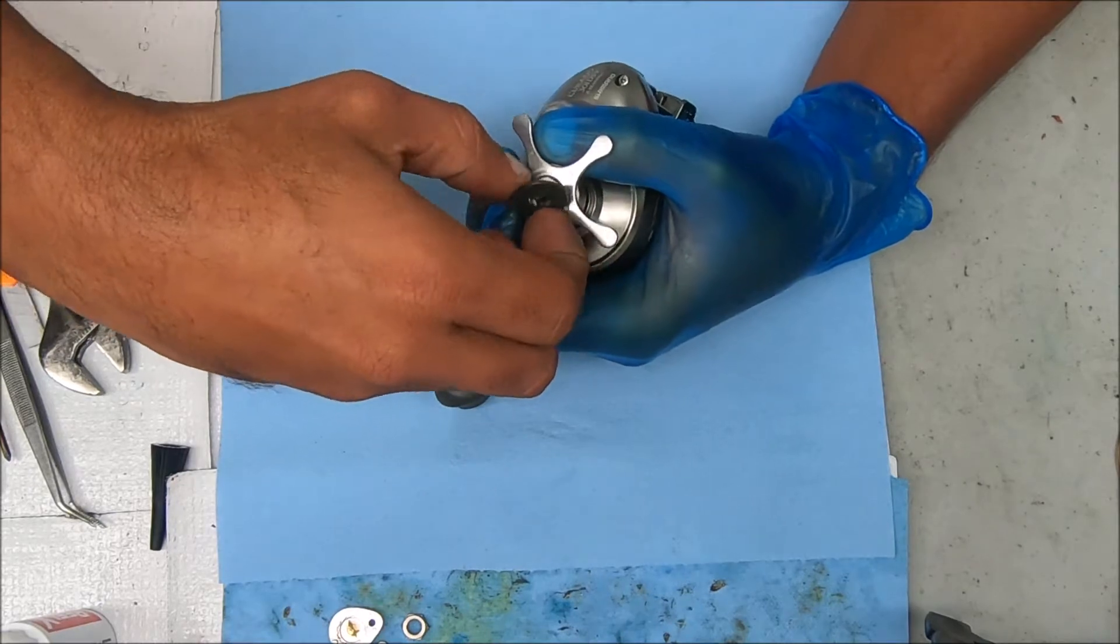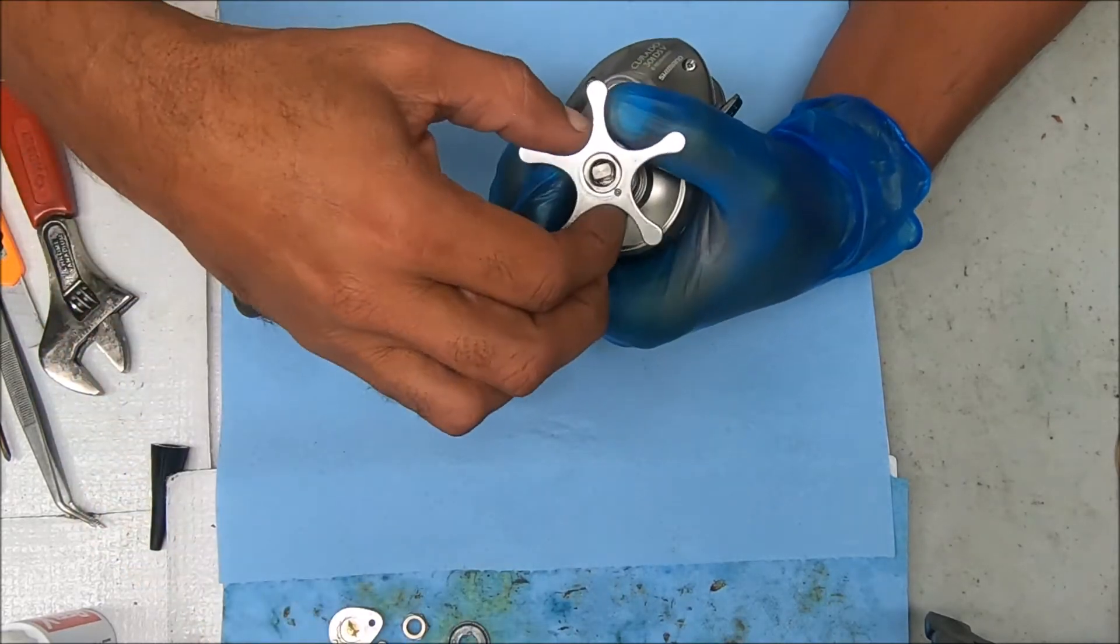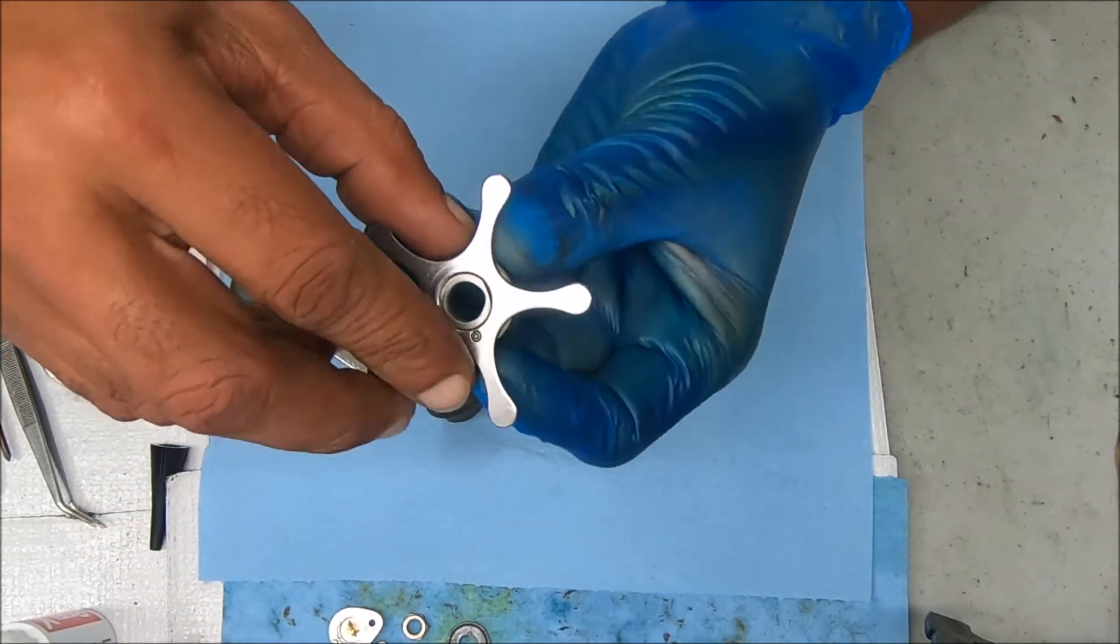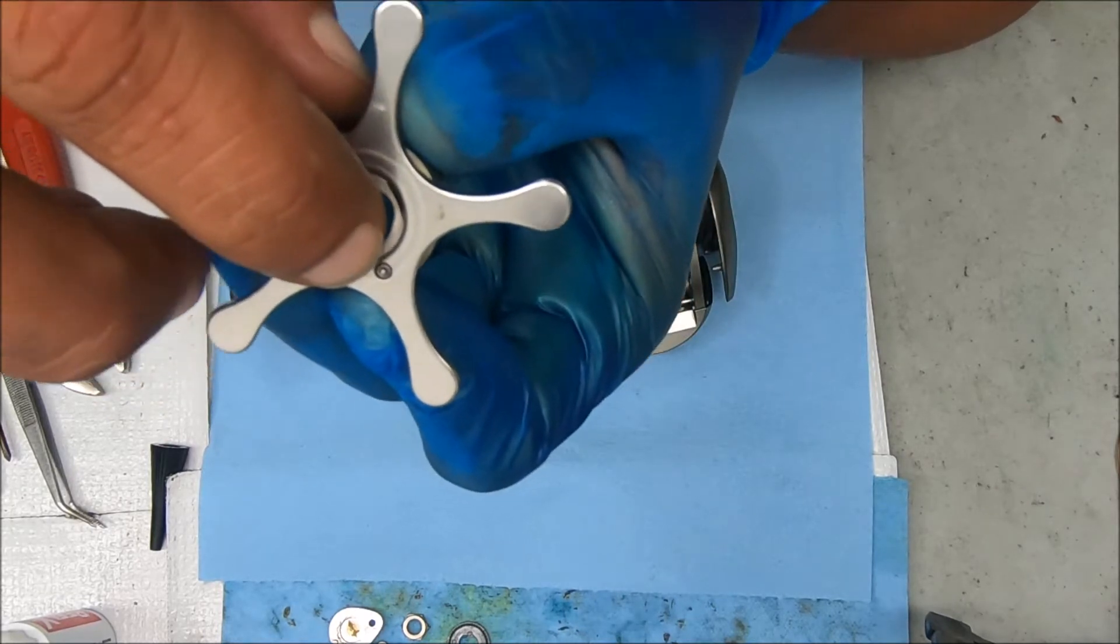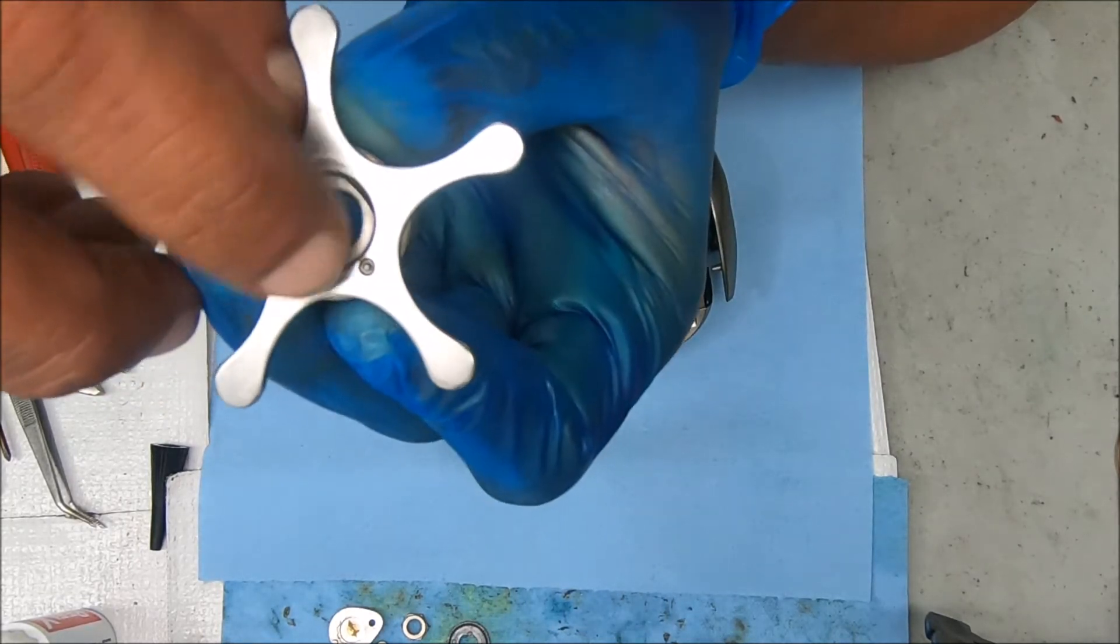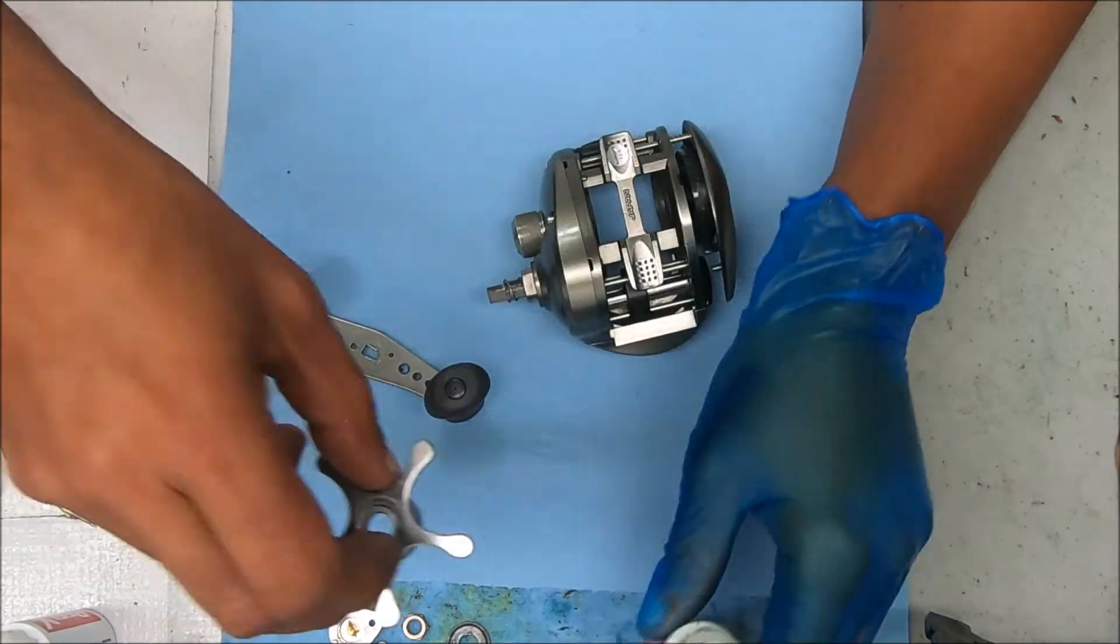And there's a little click plate under here. When you lift that up, what you're going to see is a pin, a little click pin that's inside there. Don't lose that. Under there there's a spring. Just be sure you don't lose it.